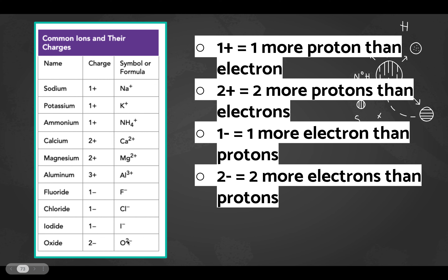Halogens like fluoride and chloride have seven valence electrons and just need one more, so when they gain one electron they form a minus-one ion. A two-minus ion has two more electrons than protons. In your notes also add Cl⁻ as a negative ion example — note that in chemistry we don't write the '1' when it's not necessary.